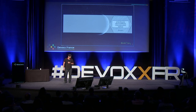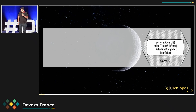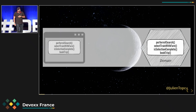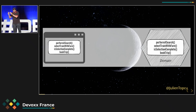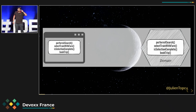Généralement, dans une architecture logicielle, on va avoir tendance à mettre la logique métier côté back-end. On considère que c'est une bonne pratique parce qu'on ne veut pas la dupliquer chez tous nos consommateurs. Ici, je vous ai représenté un domaine métier qui est celui du voyage et notamment la réservation de train. J'ai quelques features : faire une recherche de trains qui desservent ma destination, sélectionner un train et un tarif. Imaginez ça comme étant le domaine métier de votre back.